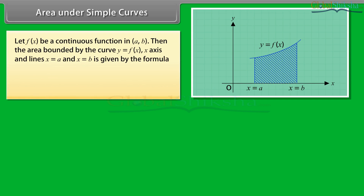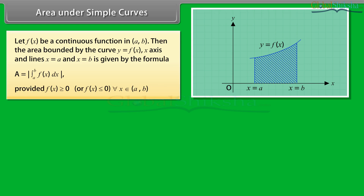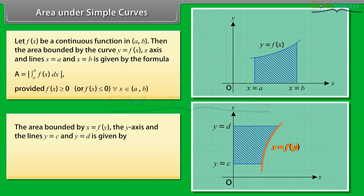Area under simple curves. Let f(x) be a continuous function in [A, B]. Then the area bound by the curve y = f(x), the x-axis, and lines x = A and x = B is given by: A = |∫from A to B of f(x) dx|, provided f(x) ≥ 0 or f(x) ≤ 0 for each x ∈ [A, B]. The area bounded by x = f(y), y = C and y = D is given by A = |∫from C to D of f(y) dy|, provided f(y) > 0 or f(y) < 0 for each y ∈ [C, D].